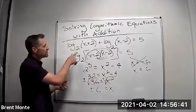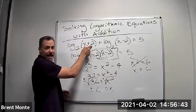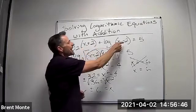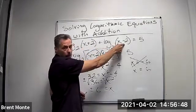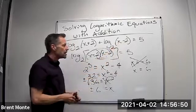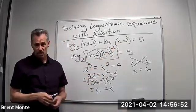6 is okay. Because if I plug it in here, I get log base 2 of 8. I can take the log of 8. That's fine. And I get log base 2 of 4 when I plug in 6 minus 2. Well, 4 is positive also. I can take that log as well.